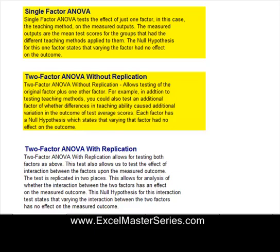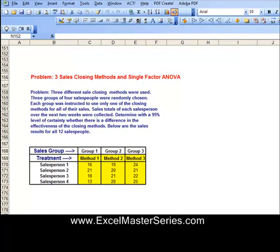For two-factor ANOVA without replication, you're adding another factor into the test, and each of those two factors has its own null hypothesis that varying that factor had no effect on the outcome. And finally, there is two-factor ANOVA with replication, where you're replicating the two-factor ANOVA test in two different locations so you can compare the interaction between the two factors and develop a hypothesis test for that interaction.